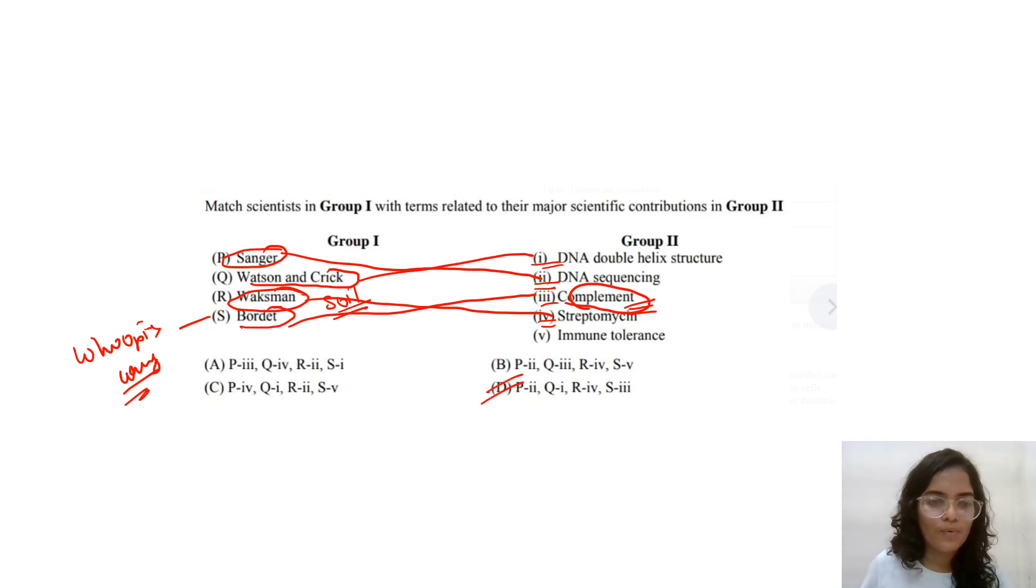If you don't know Bordet, then check the sequence first. 2, 1, 4. So, 2, 1, 4. Option D. Even if you don't know one option, it is fine. You can find it out yourself.